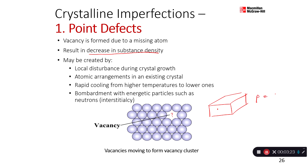Density is mass over volume, so this part will be less and therefore the whole density will be less. There are a few reasons this could happen. One of them is a local disturbance during crystal growth. Metals are formed in the solidification process — during the growth of crystal from the nucleus, there might be some local disturbance, maybe in the energy levels, which caused an atom not to be in that position, leaving it empty.